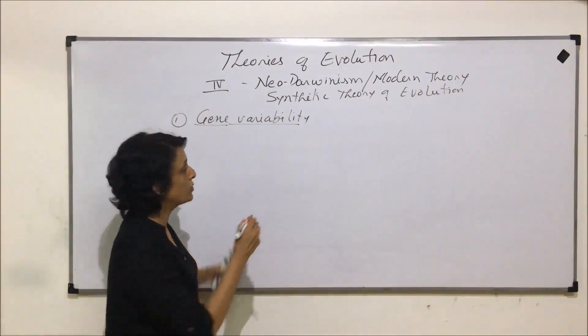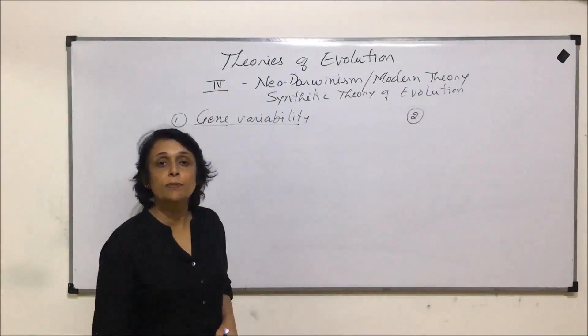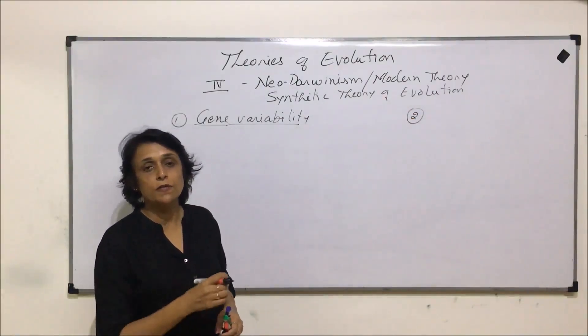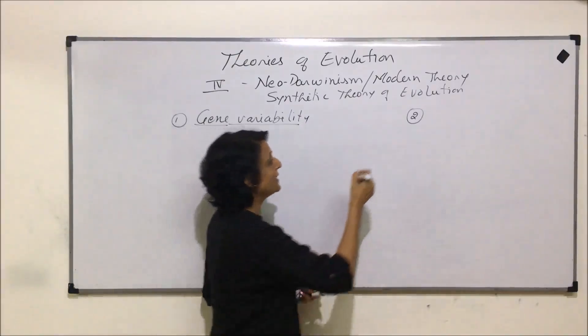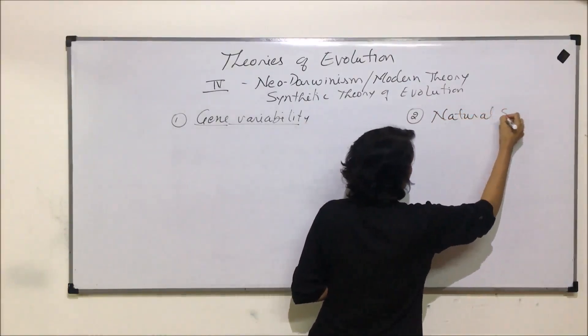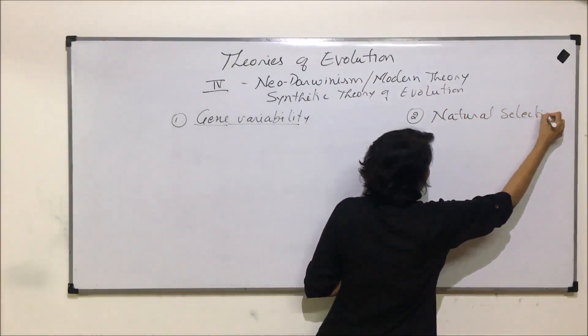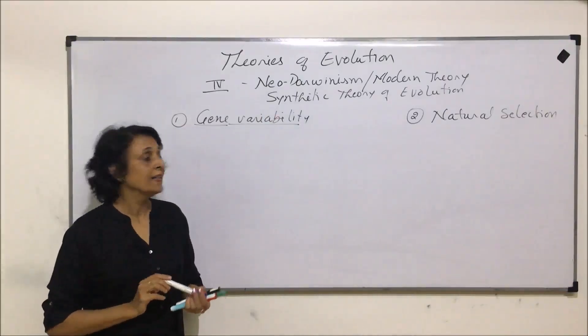The second postulate says that the best adapted organism, or the one which is adapted properly for that environmental condition, is selected by nature. So it is natural selection. That means the best adapted organism would be selected by nature.